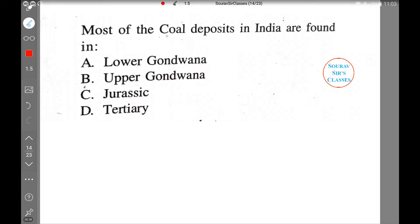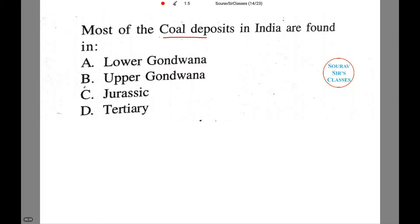So first let us read the question. The question is: most of the coal deposits in India are found in — with the following options: lower Gondwana, upper Gondwana, Jurassic, or tertiary.